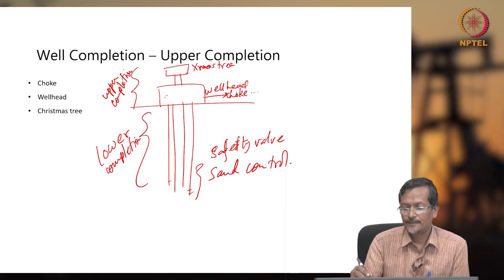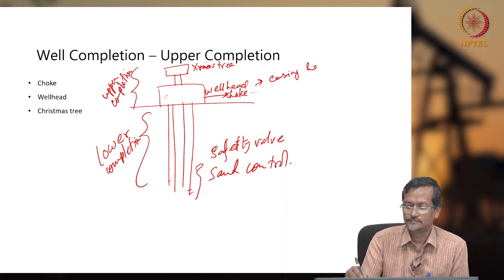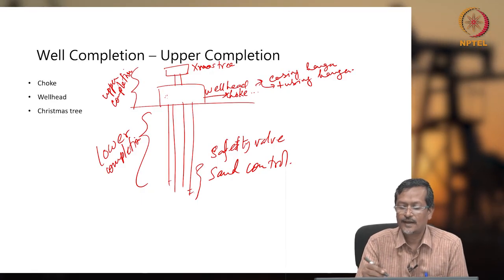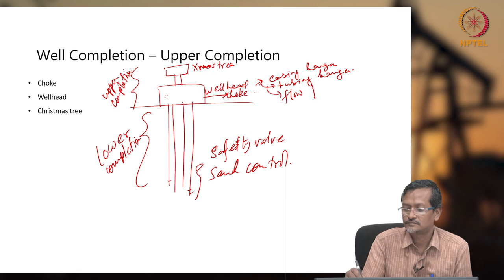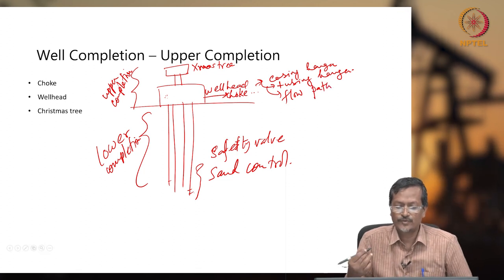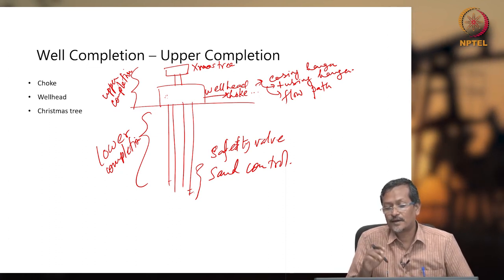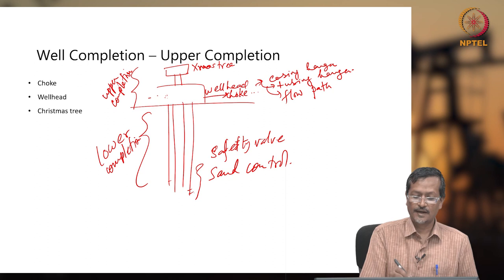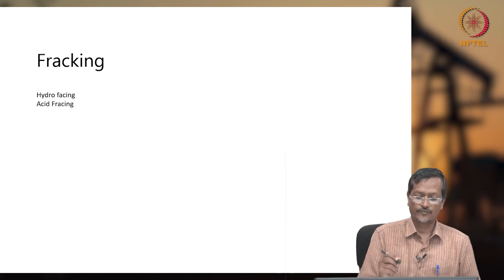The wellhead will contain the casing hanger and tubing hanger, and it will allow the flow path. When fluid is coming from the wellbore to the surface, it will pass through the wellhead. The wellhead gives the flow coming out, connected to a choke, and there will be accessibility for kill fluid injection.